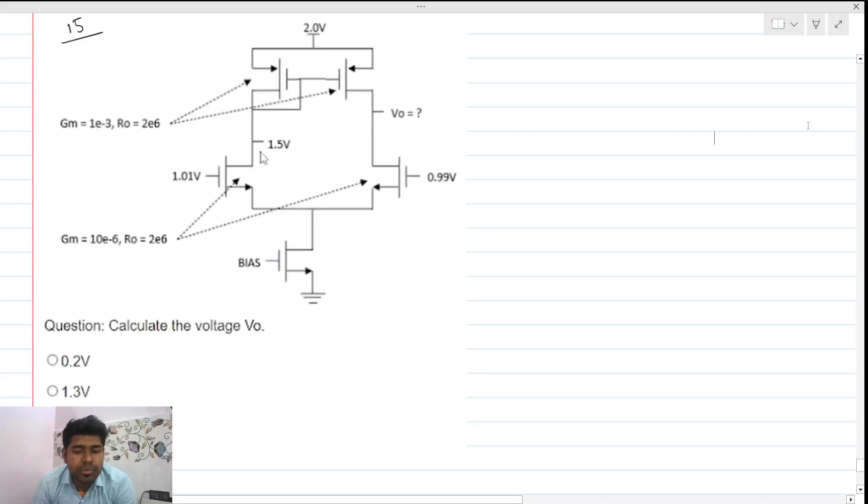Hi everyone, welcome to this session. Let's solve this problem. Here we have to calculate the output voltage. This is a very common circuit called a differential pair with active load.